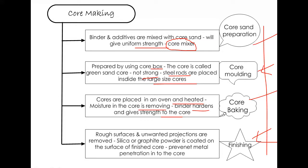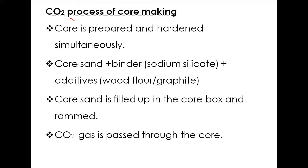In the finishing stage, surface rubbing is done and unwanted projections are removed. Silica or graphite powders are used for coating to finish the core and prevent metal penetration into the core. The core is placed inside the mold cavity after the pattern is removed. Molten metal is poured and fills the mold cavity, but must not enter inside the core, otherwise the expected shape and size of the component will not be obtained.